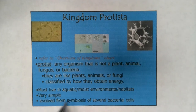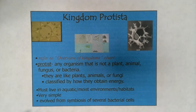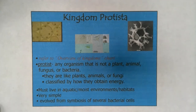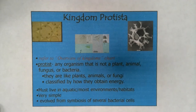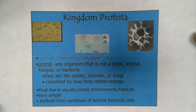Protists have to live in aquatic or really moist, wet habitats. They are very simple as a group — even the multicellular plant-like protists are still really simple organisms. It's thought they evolved from a symbiosis of several bacterial cells, where a larger bacterial cell engulfed a smaller one, and that smaller cell started to act as an organelle. This is known as the endosymbiont hypothesis. We're going to go to lab and don't do a ton with protists, but we want to expose you to their unique adaptations.